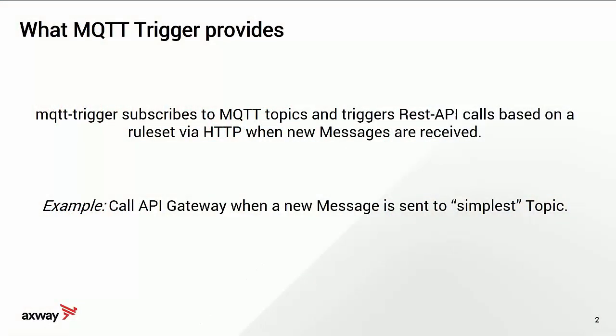The MQTT trigger is a Docker container that contains the MQTT trigger component as well as an MQTT broker. It allows you to subscribe to MQTT topics and then, depending on those topics, trigger REST API calls.